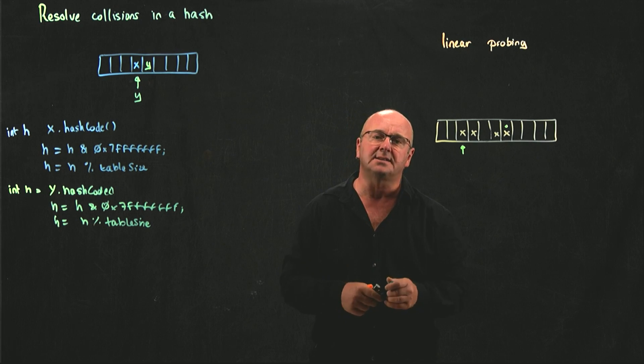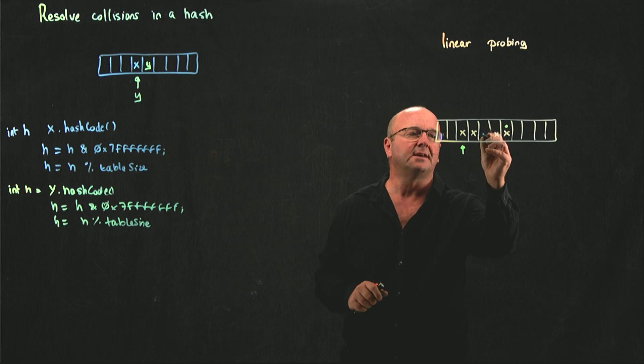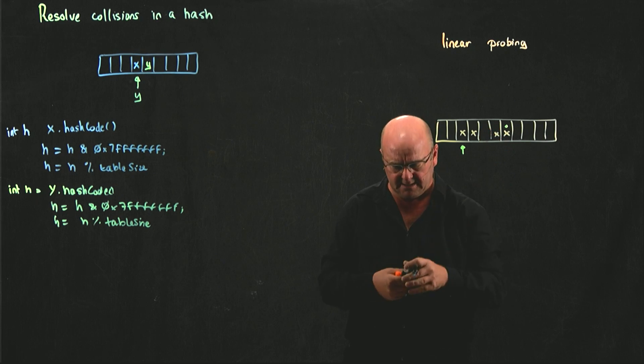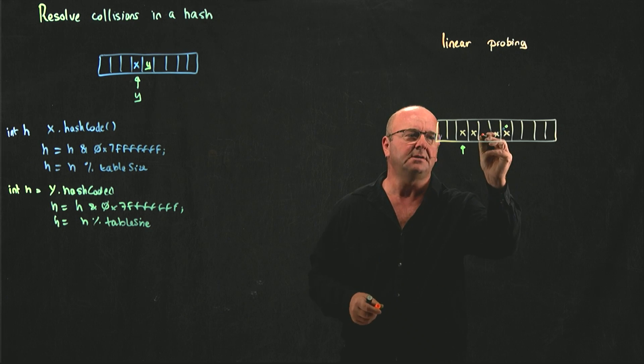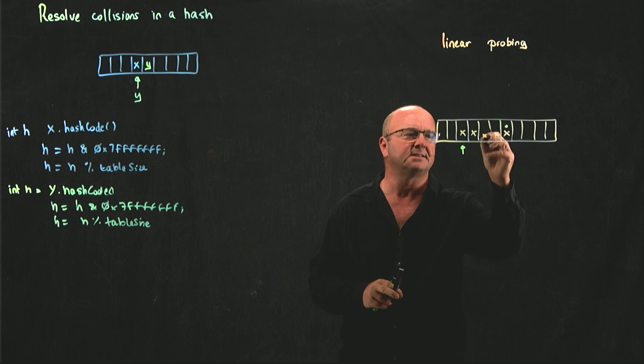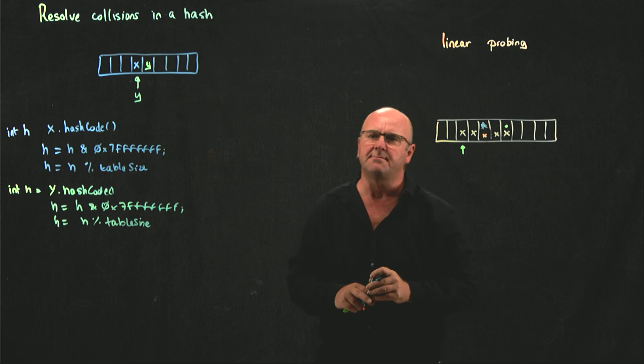So, instead of just deleting something and acting like it's not there, you have to set a flag and say, this thing was in our data structure, there was something in this space, but now this space is empty,